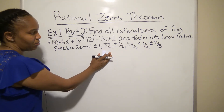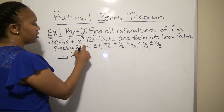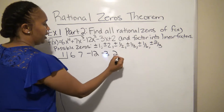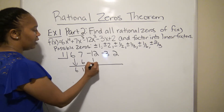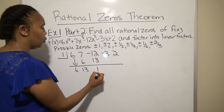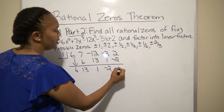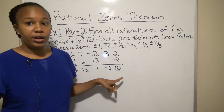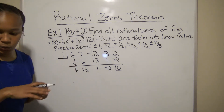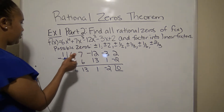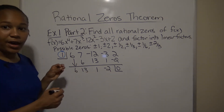Using synthetic division with k = 1, my coefficients are 6, 7, -12, -3, and 2. Dropping down 6: 1×6=6, 7+6=13, 1×13=13, -12+13=1, 1×1=1, -3+1=-2, 1×(-2)=-2, 2+(-2)=0. The remainder is zero, so 1 is a zero.